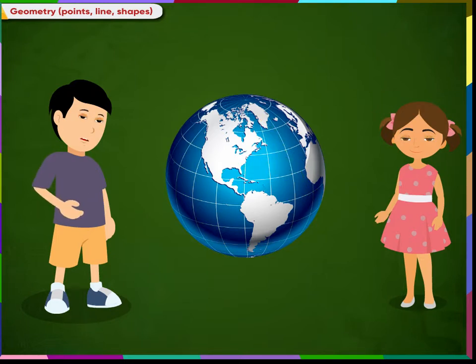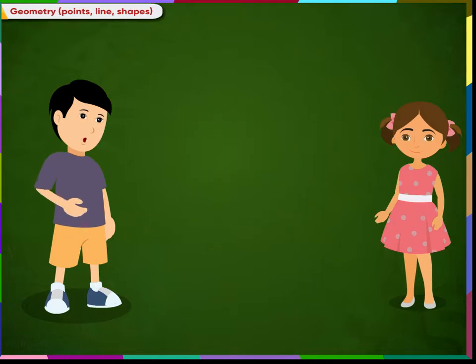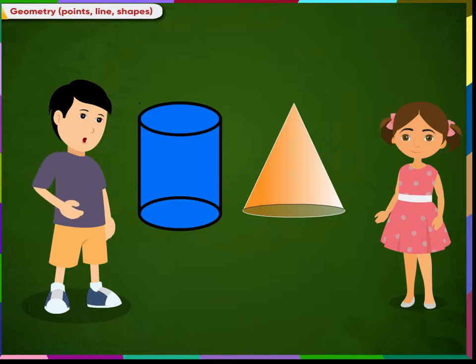So, this globe has a curved surface. For example, these shapes have curved surfaces.